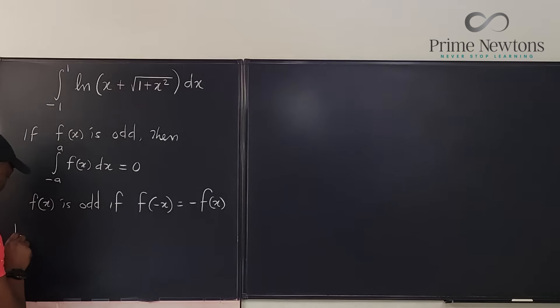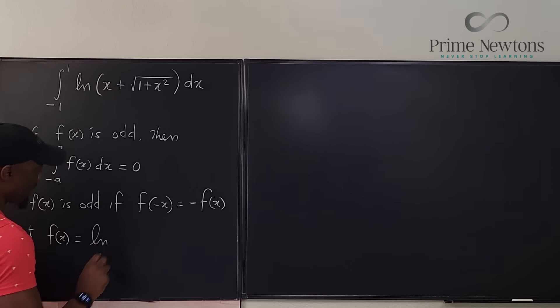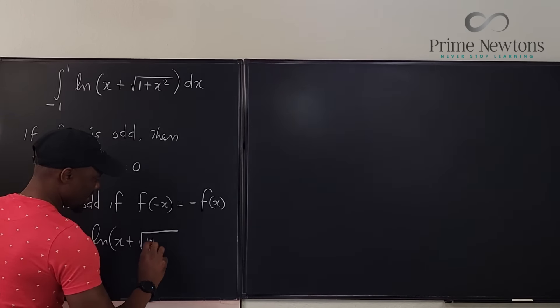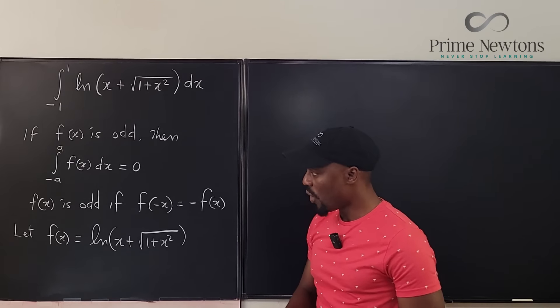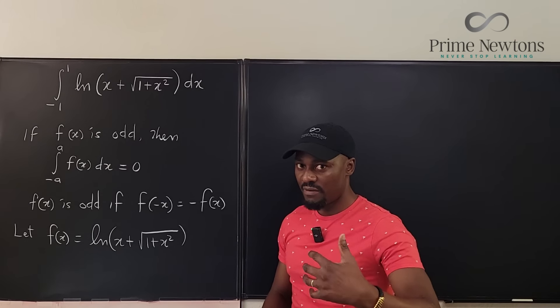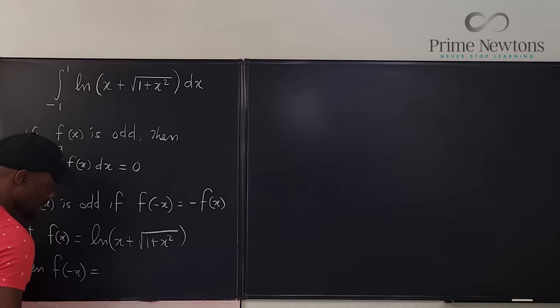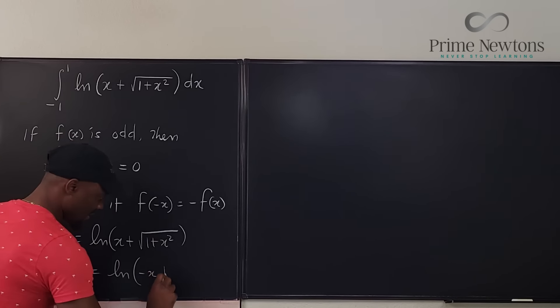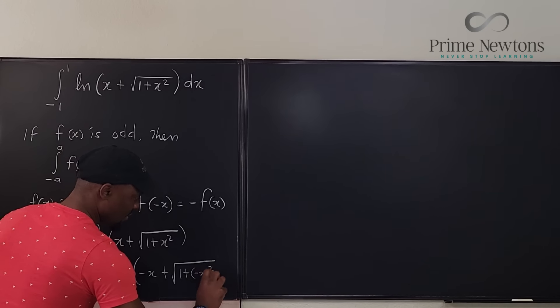Let f of x be equal to the natural log of x plus the square root of 1 plus x squared. So this is our f of x. In this case, what would be our f of negative x? Then f of negative x is going to be the natural log of negative x plus the square root of 1 plus negative x squared.